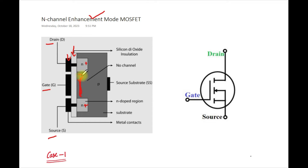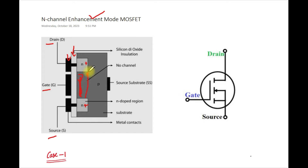If a physical channel is present, it is a depletion mode MOSFET; if the physical channel is absent, it is called enhancement mode. Because of this absence of a channel, enhancement mode MOSFETs are always in the off condition — there is no channel between the two N+ regions for electrons to flow through.